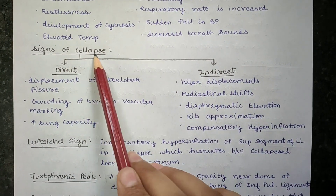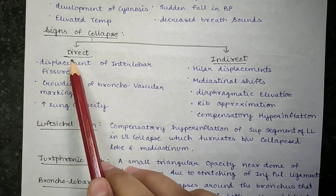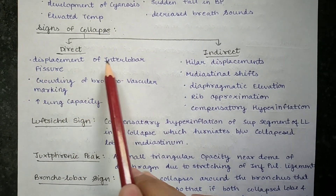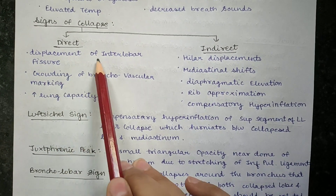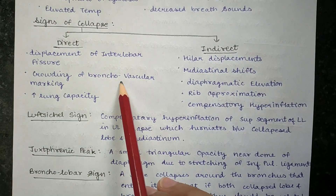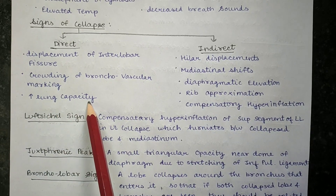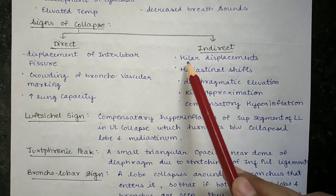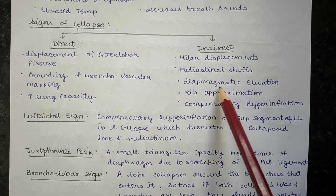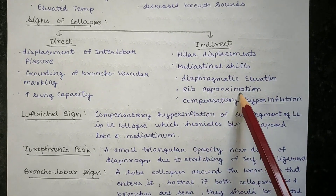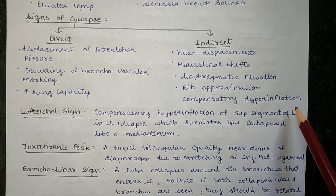Signs of collapse are divided into direct and indirect signs. The direct signs are displacement of the interlobular fissure, interlobar fissure, crowding of bronchovascular markings, and increased lung opacity. Indirect signs include hilar displacement, mediastinal shift, diaphragmatic elevation, rib approximation, and compensatory hyperinflation.